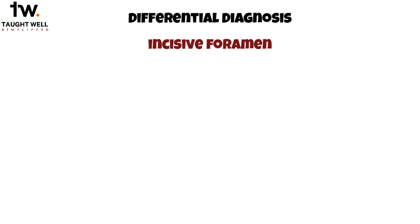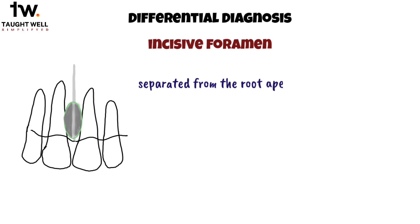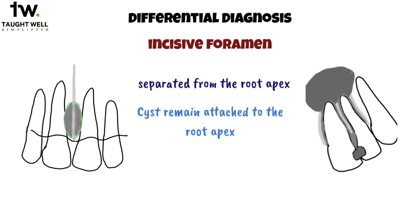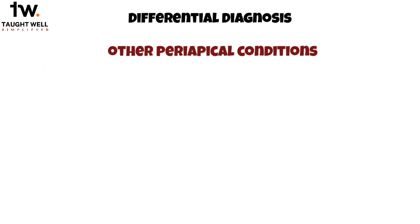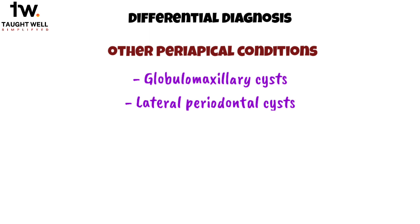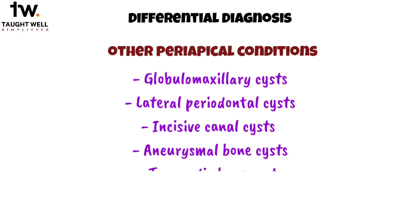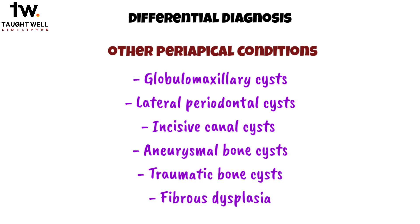Additionally, it's important to differentiate an apical cyst from normal bone cavities, such as the incisive foramen. A normal cavity appears separated from the root apex in radiographs taken from different angles, whereas a cyst remains attached to the root apex regardless of the imaging angle. There are other periapical conditions that can resemble an apical cyst radiographically, such as globular maxillary cysts, lateral periodontal cysts, incisive canal cysts, aneurysmal bone cysts, traumatic bone cysts, and fibrous dysplasia. These conditions should be carefully considered and differentiated from cystic apical periodontitis.